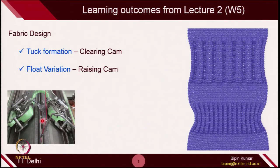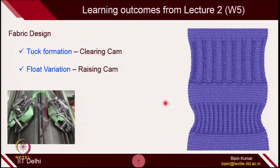The machines I am going to use are V-bed machines, where you have 2 beds — front bed and back bed. These are the fabrics which will look different when you change the stitches. At this segment the stitches are different, and in this segment the stitches are different. You can see how the fabric nature is changing depending on the stitches present on the fabric surface.